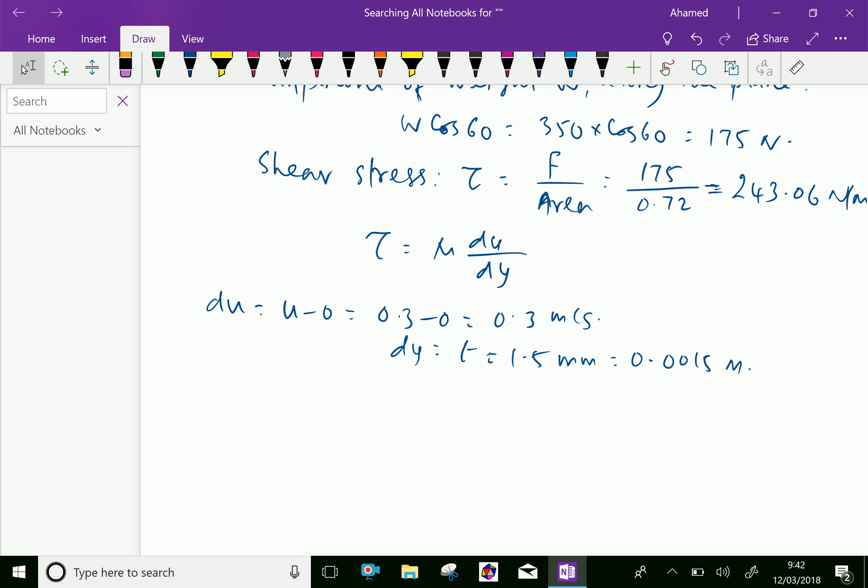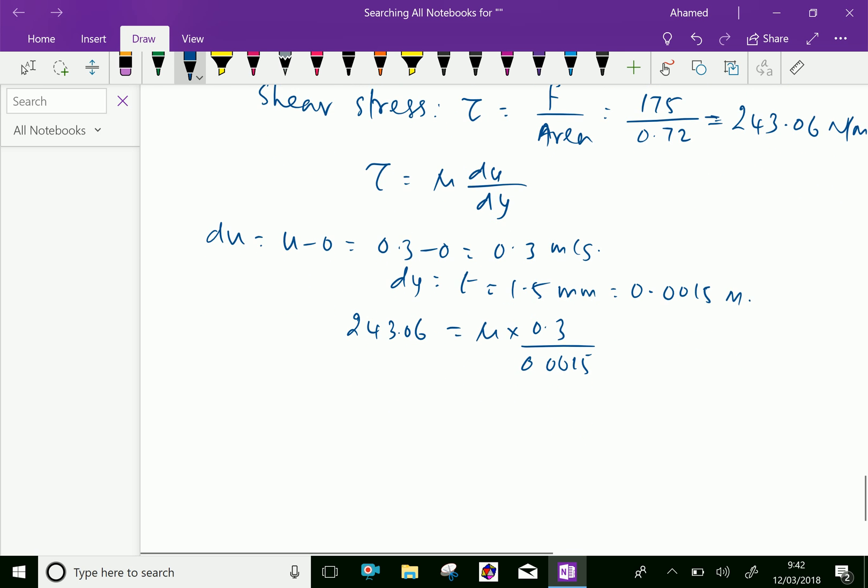Therefore, we have the shear stress 243.06 newton per meter square equals mu, the dynamic viscosity, into du which is 0.3 over dy which is 0.0015. By cross-multiplying, mu equals 243.06 into 0.0015 over 0.3.